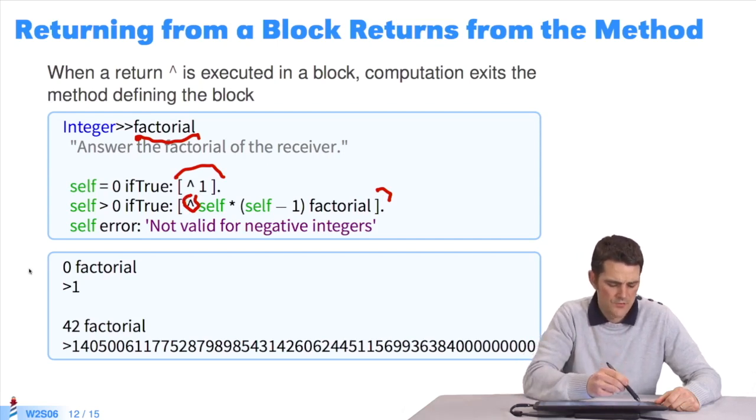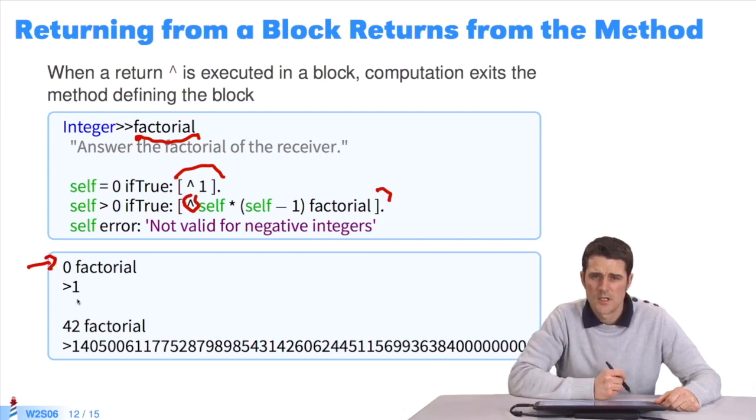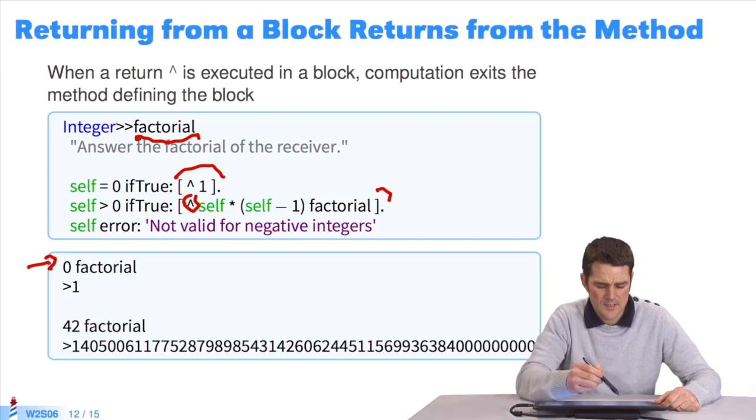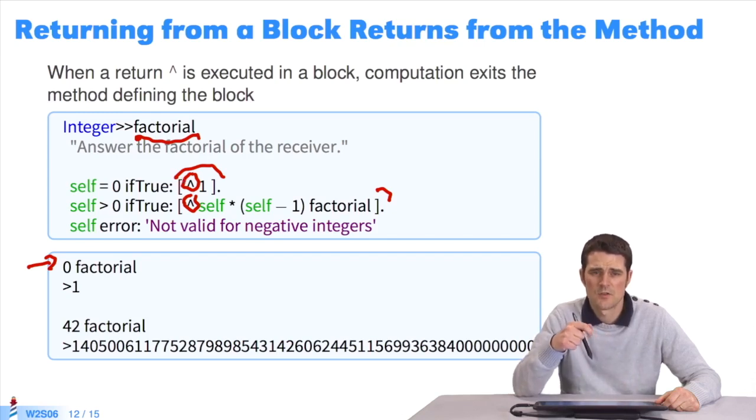For instance, if I send the message factorial to the integer 0, it returns the answer 1. I get this answer thanks to this caret, the first in the block, which helps to exit the method factorial. A return in a block helps to exit the method which defines the block.